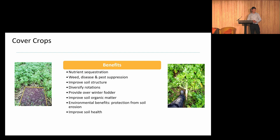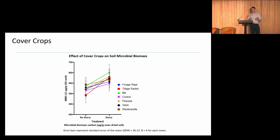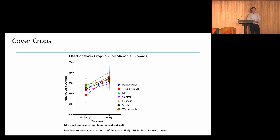Cover crops provide environmental benefits such as protection against soil erosion — they act as a physical armour to dissipate energy from rain. As Marcello said, the erosivity of rainfall is going to increase in the future, and these are key things which can be integrated to improve overall soil health. In terms of soil biology, we looked at soil microbial biomass with different species with and without slurry, however we did not find any statistical differences — this was measured during the growth of the cover crop and does not take into account the incorporation of that carbon back into the soil.